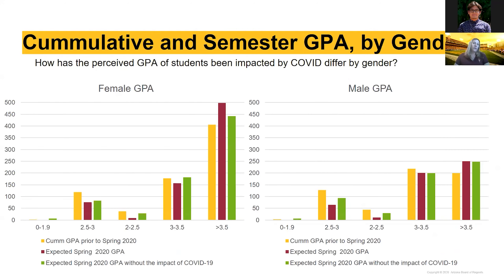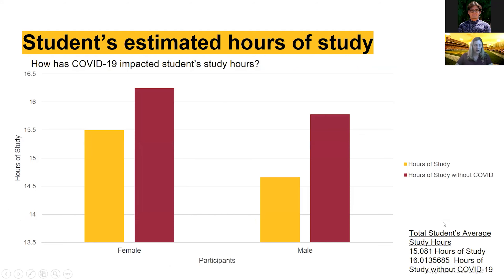I also wanted to find out if this had anything to do with gender. These were the only two gender identities on this specific survey, but females reported higher GPA scores overall — 3.6 and higher — and expected to receive a higher GPA than their cumulative before spring semester. The perceived GPA is higher for both males and females with the pandemic. Students were also asked how many hours they studied in the two weeks prior to the survey, and how many hours they thought they would have studied in those two weeks if COVID had not happened. The average total for both male and female with COVID was 15.08 hours, compared to 16.08 hours without — so it really didn't fluctuate that much.